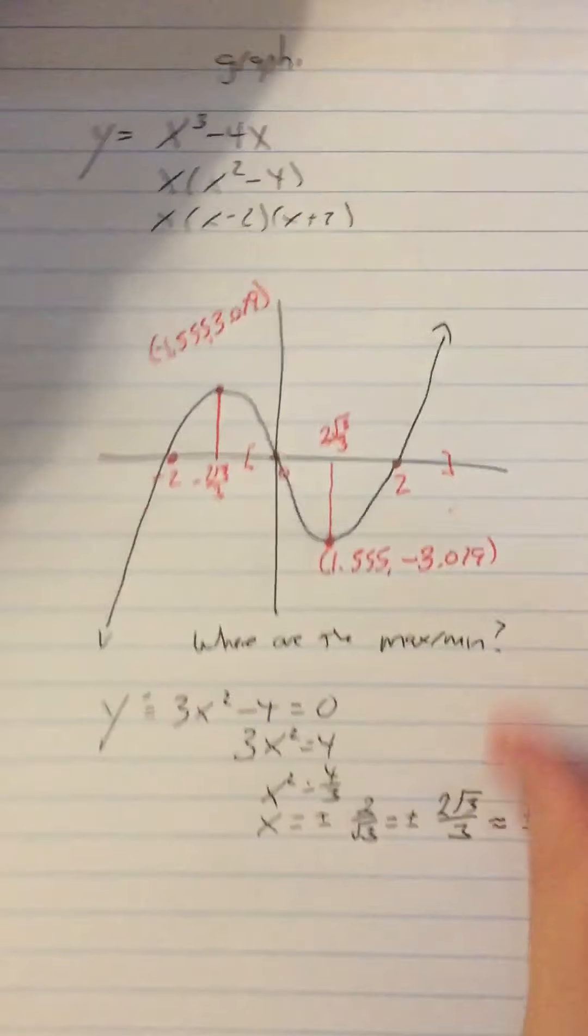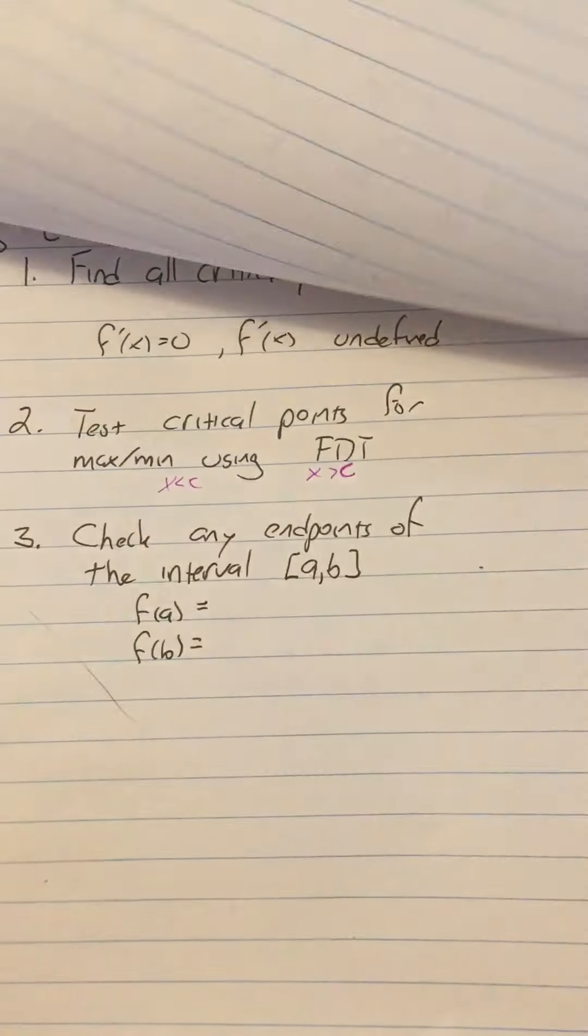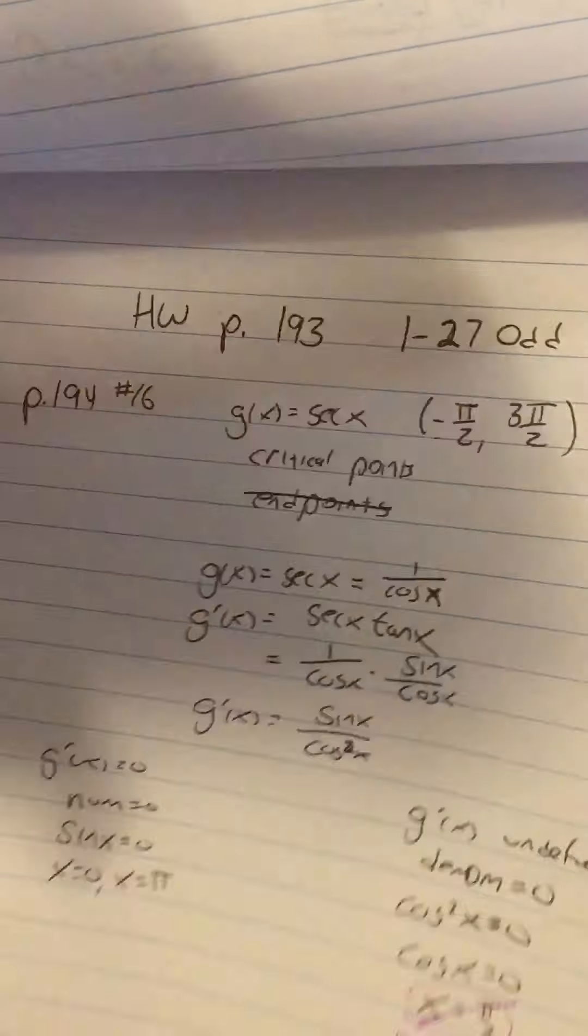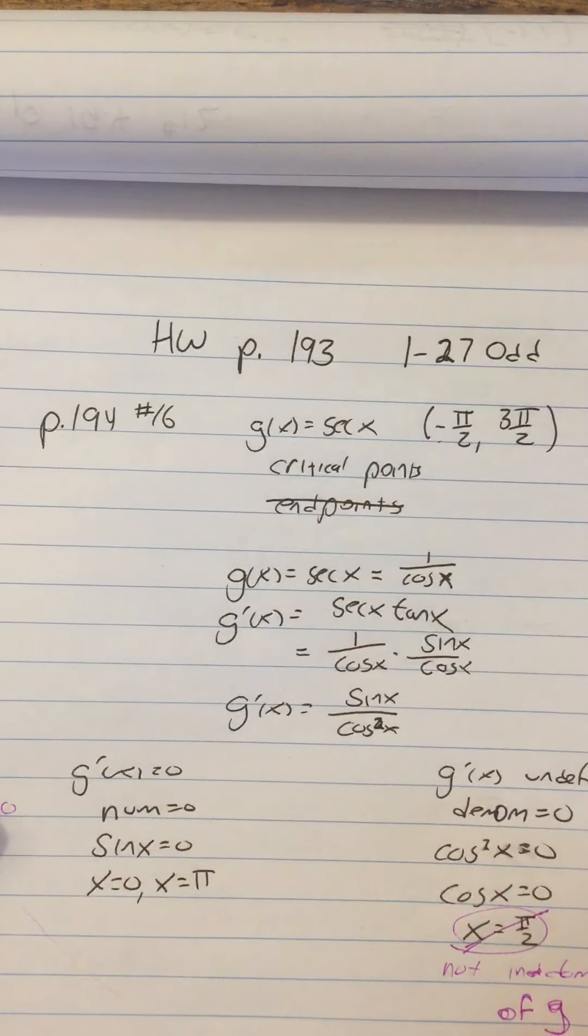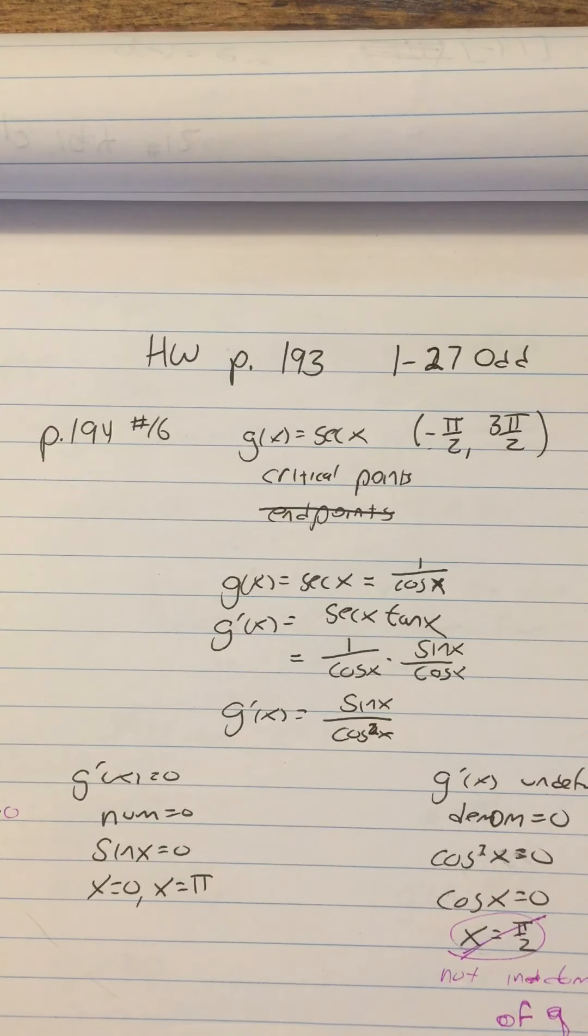So there you go. Your homework, as we said before, was a certain number of problems that are written somewhere for your entertainment purposes. Right here, page 193, number 1 through 27 odd. That's your homework on this. Enjoy. Schedule me for flex if you get stuck.